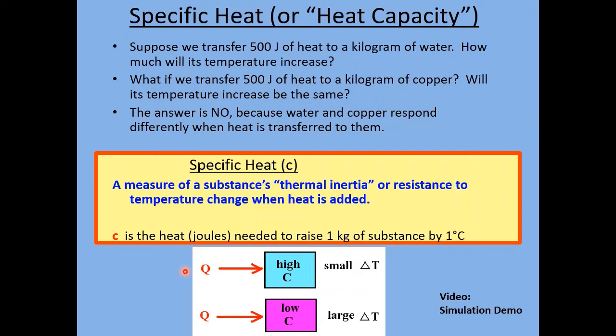Let's see what this means with specific heat. Imagine we have two substances: one has a high specific heat and the other has a low specific heat, and we pump in the same amount of heat Q into both. The material with the high specific heat has more thermal inertia, so it's going to only experience a small change in temperature. Whereas the material with a low specific heat will experience a relatively large change in temperature.